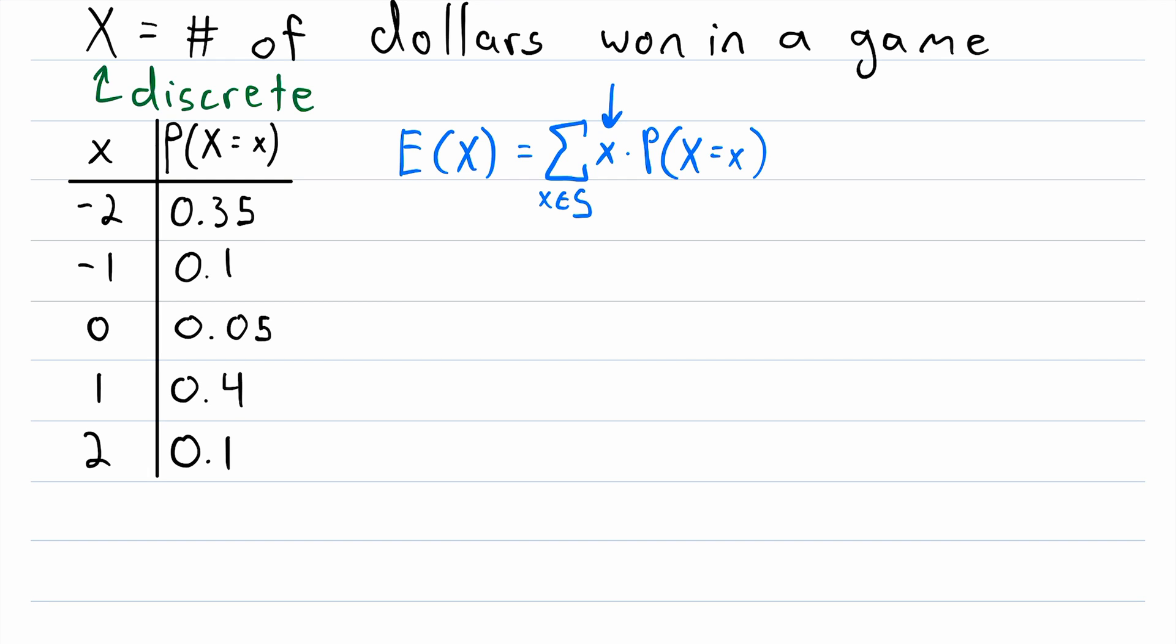So this just says, for the expected value of a discrete random variable, take each possible outcome, multiply it by its probability, and then add all of those up. It's just fantastic. So let's put it to good use and see it in action in order to find the expected outcome of this game.